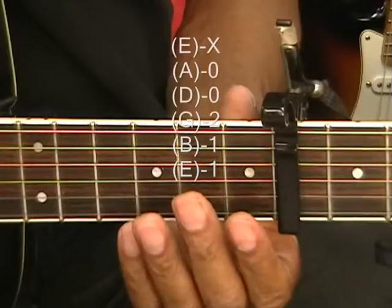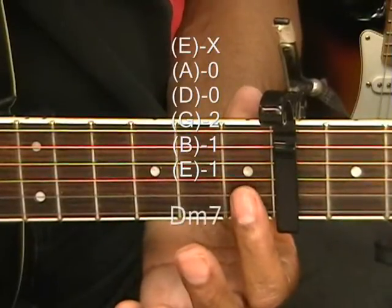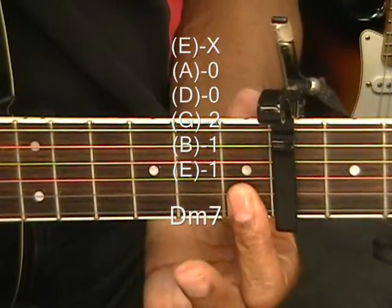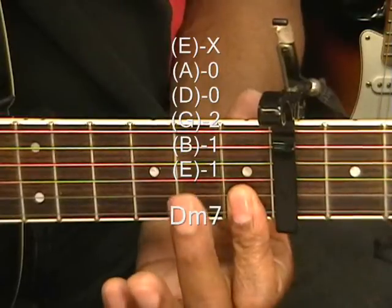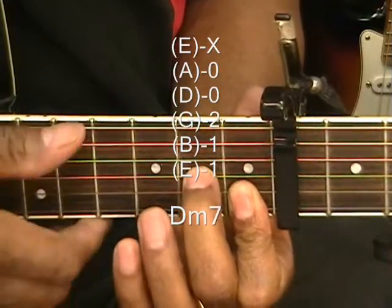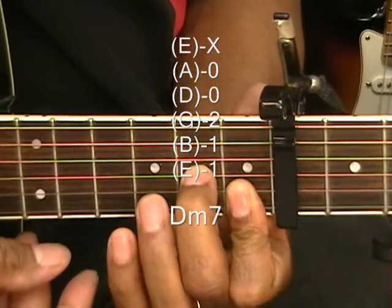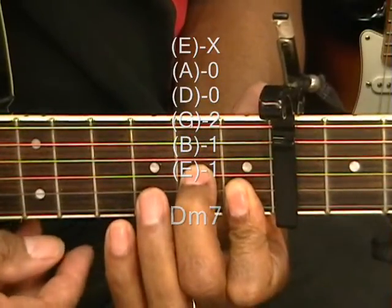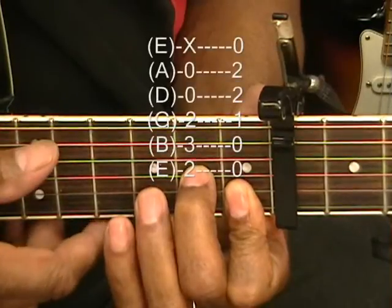We'll play D minor 7 by holding down the B and high E string at fret 1, and bringing in the middle finger to the G string fret 2, and strumming from the A string or the D string. We don't want to strum the low E on that one.